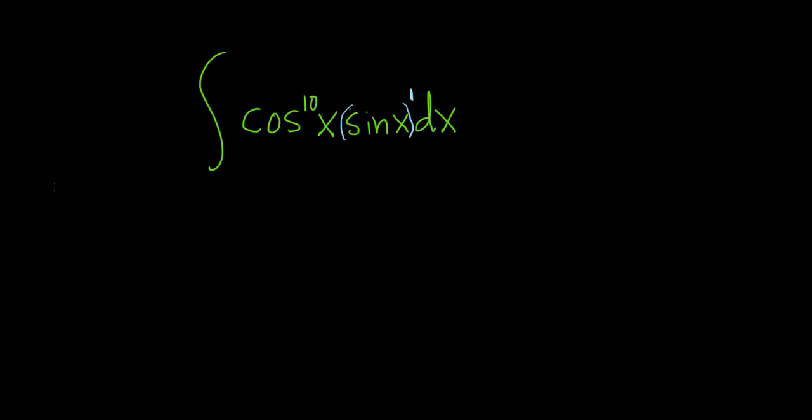So whenever you save a copy of sine, you let u be the other one, so u is equal to cosine.